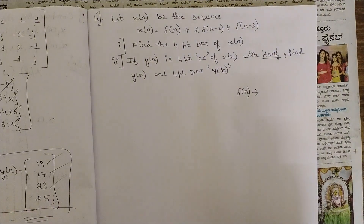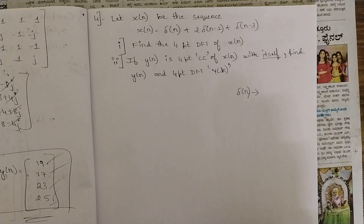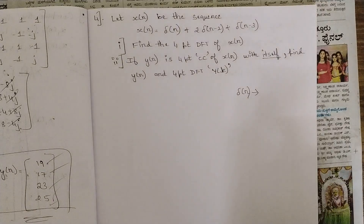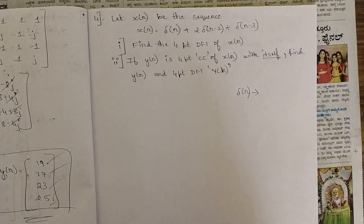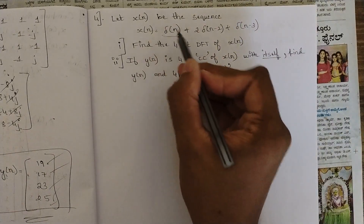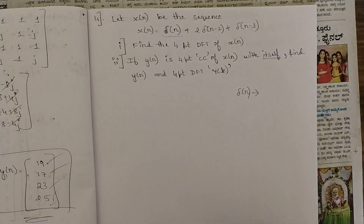Hello everyone, welcome to this new session. In the previous session we started with the topics of circular convolution and discussed a few important problems. We are going to continue with those problems of circular convolution, but in this session we are going to deal with two different kinds of problems where we come across a new term — delta of n. In digital signal processing this is represented as delta.